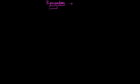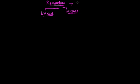Reproduction can be categorized into two categories. First, it can be asexual, and second, it can be sexual reproduction. Reproduction is possible for both plants as well as animals. Today we are going to learn about reproduction in plants.